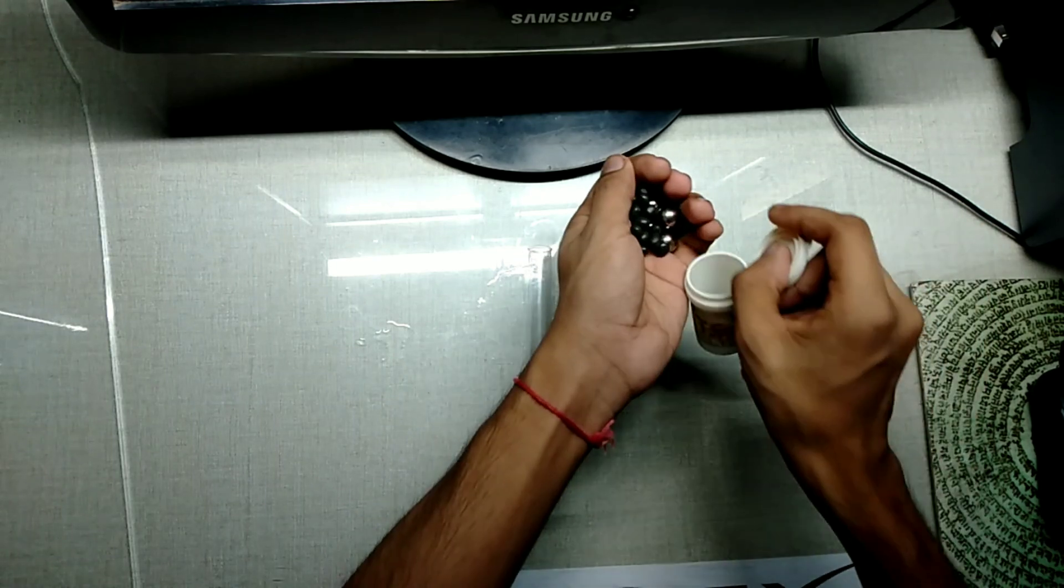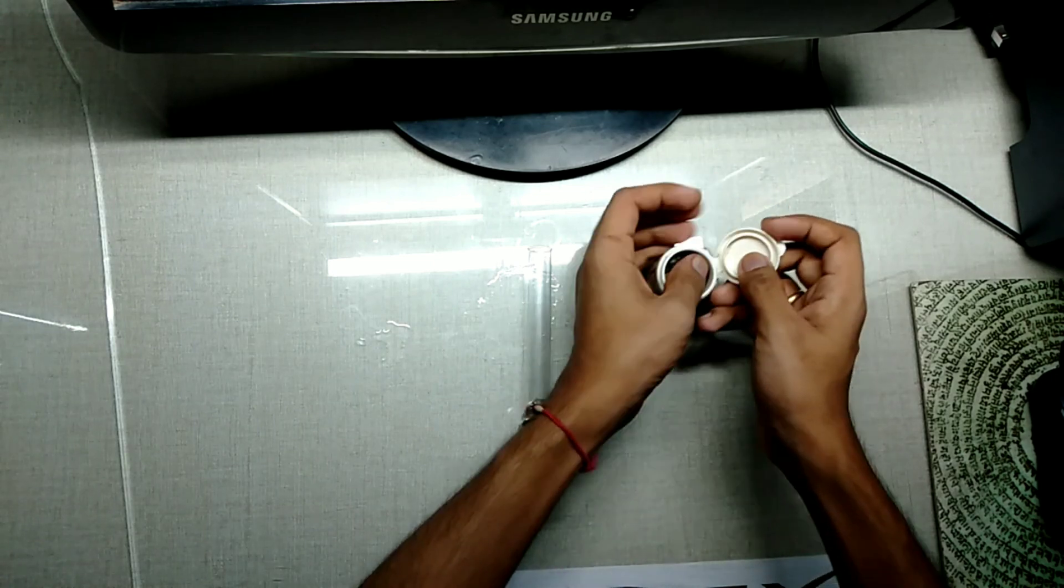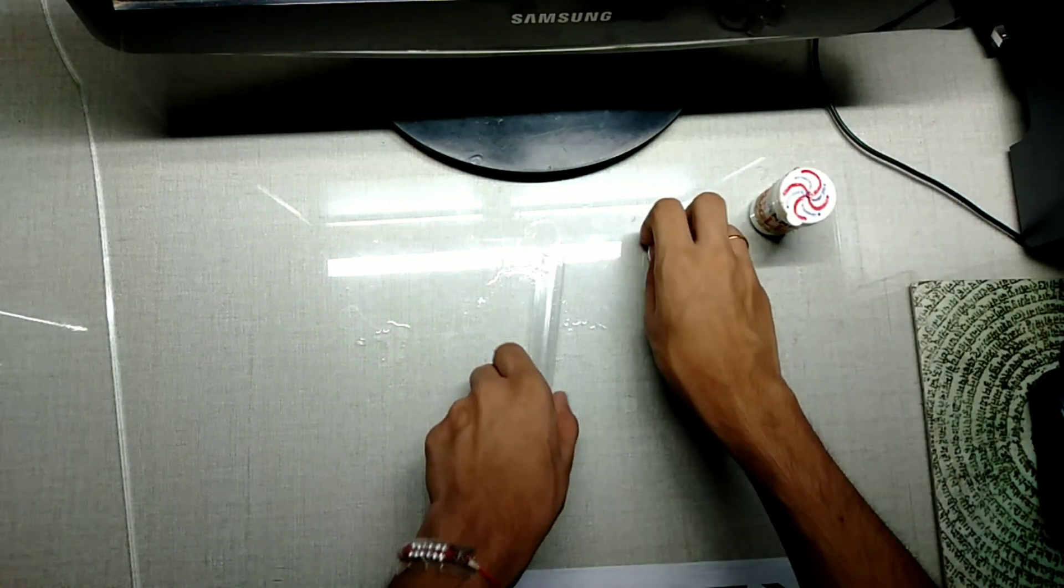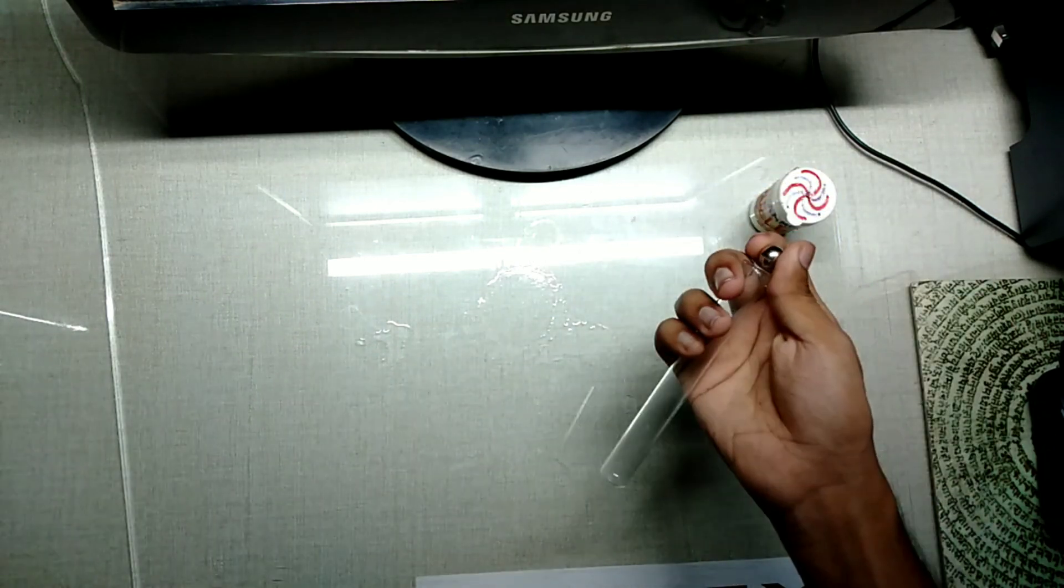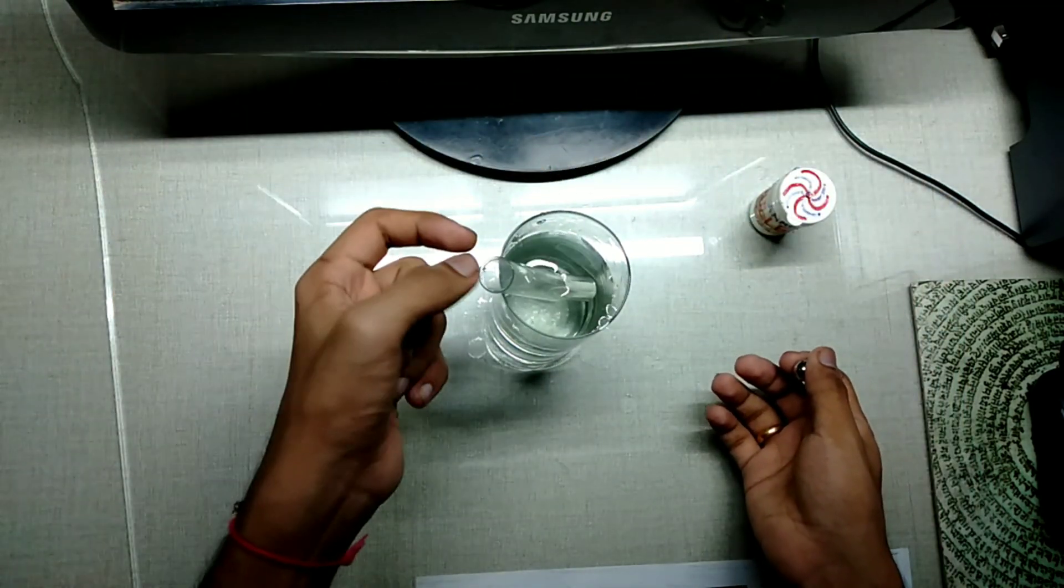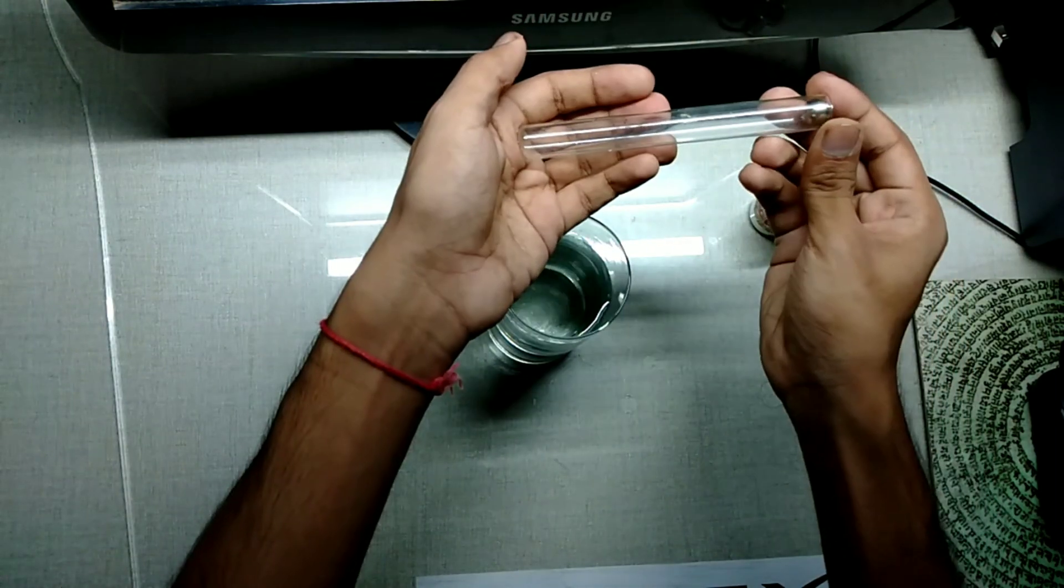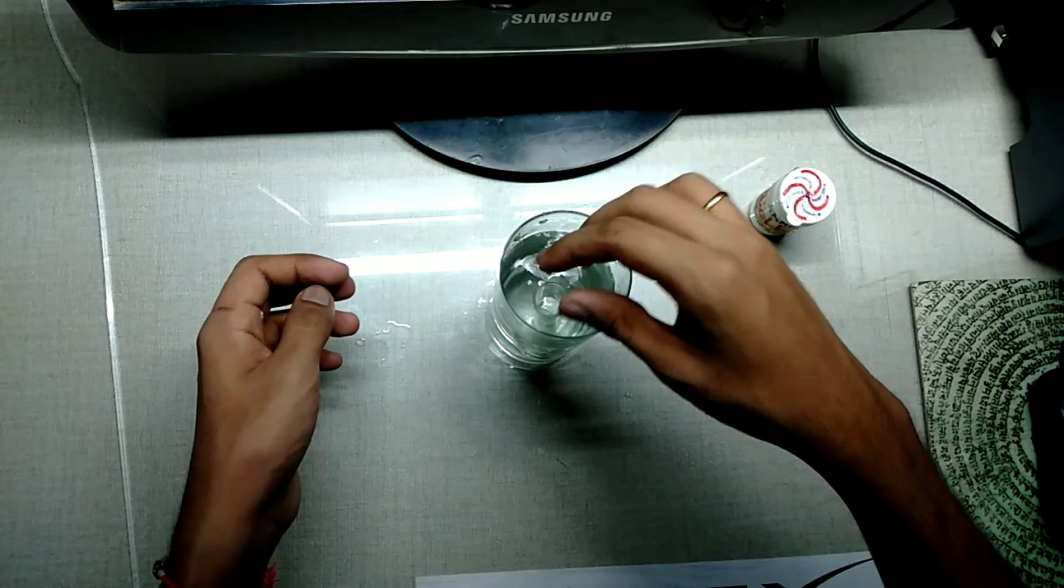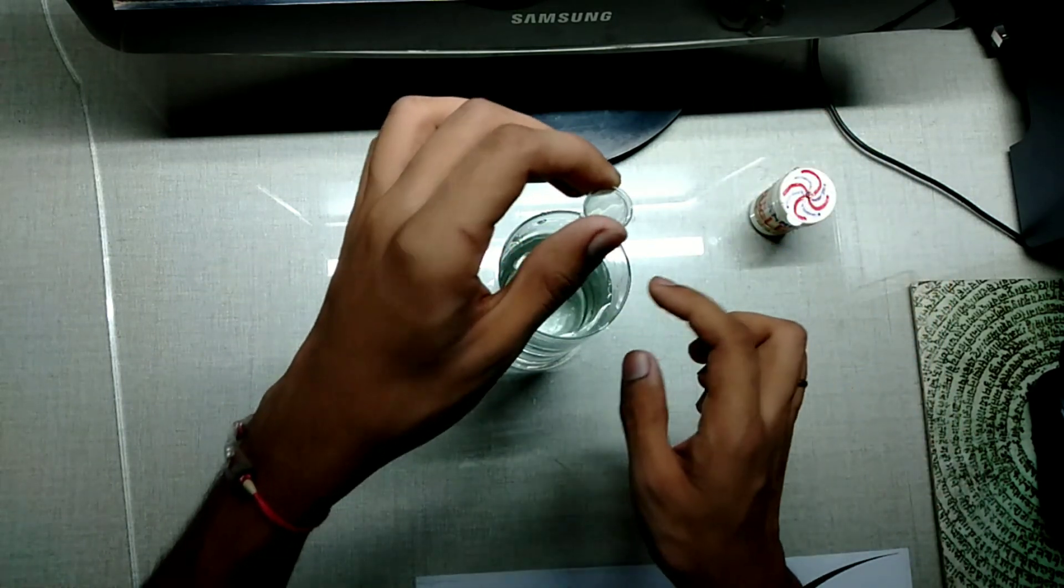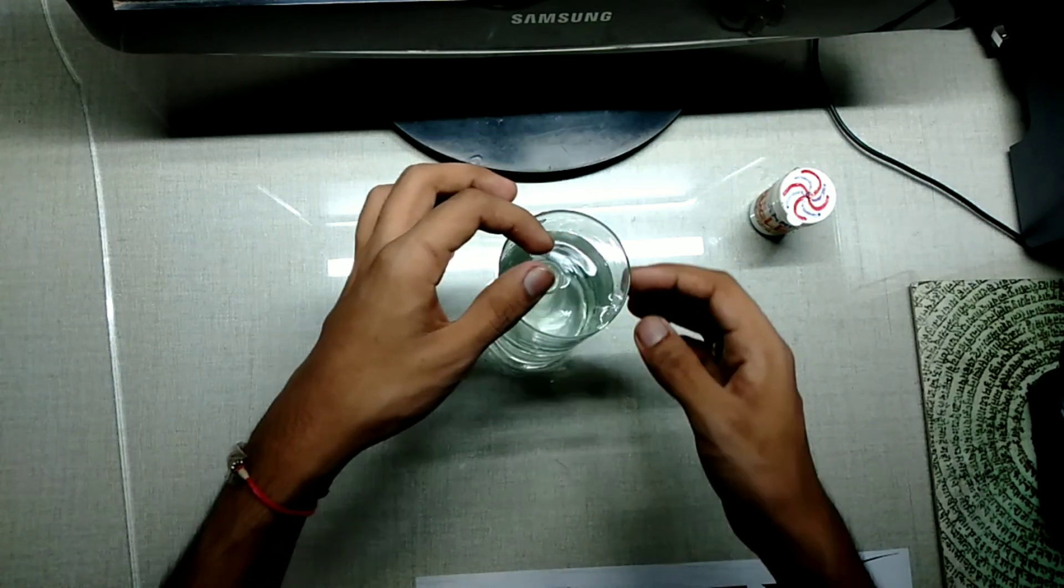So the concept is that if I don't add the weight to this test tube it will just float because of the air inside it. So what I need to do is add a little bit of weight. Okay so as you can see the weight is too much for the test tube to float in the liquid because it is just sinking down.